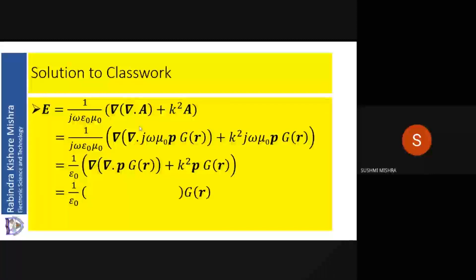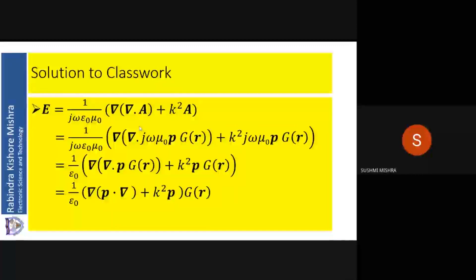Let me take G_R common. If I take G_R common, it becomes 1/epsilon_0 · divergence of grad of (P dot del), because del will not operate on P, but del is a vector and P is a vector. So: P dot del plus k-squared·P·G_R. This is the solution for E.